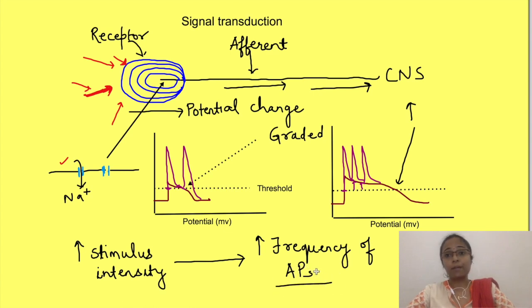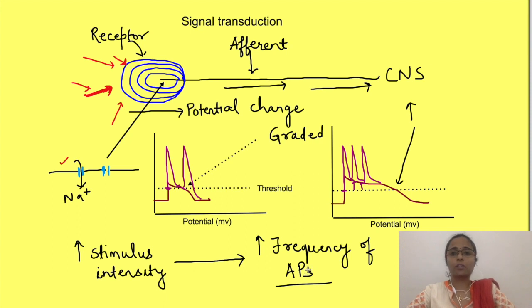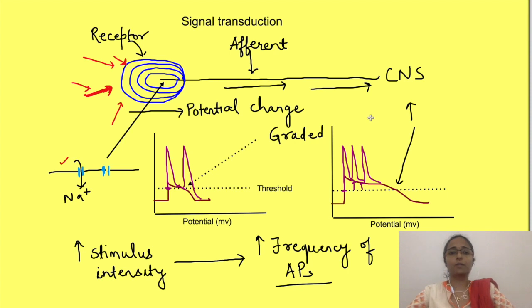This is a mechanism by which stimulus intensity is coded. Whenever the CNS receives more action potentials from a particular sensory neuron, you will perceive it as a higher intensity of stimulus.